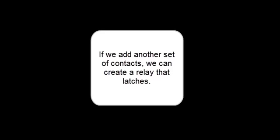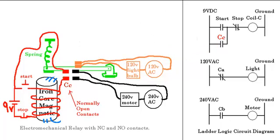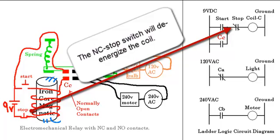If we add another set of contacts, we can create a relay that latches. The additional contacts will keep the coil energized even after the start switch is released. The normally closed stop switch will de-energize the coil.